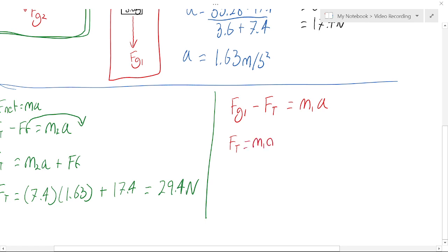Ft would be m1g minus m1a, which is 3.6 times 9.8 minus 3.6 times 1.63. We would also get 29.4 newtons as our Ft.